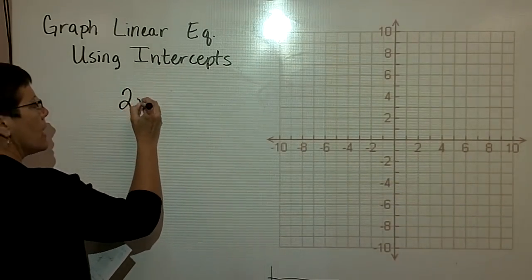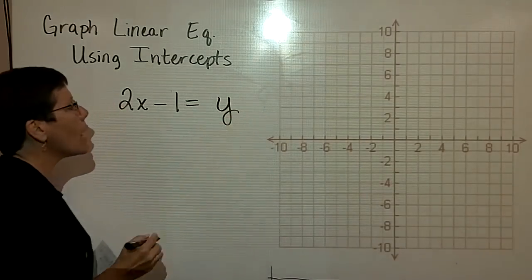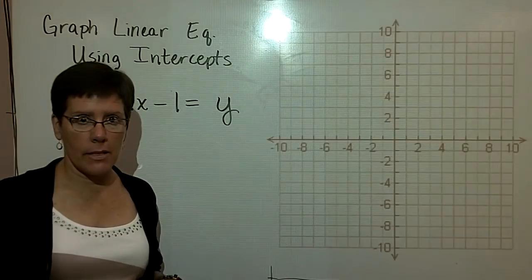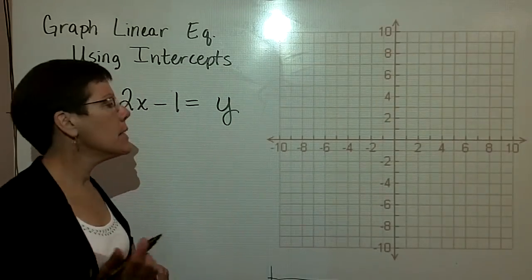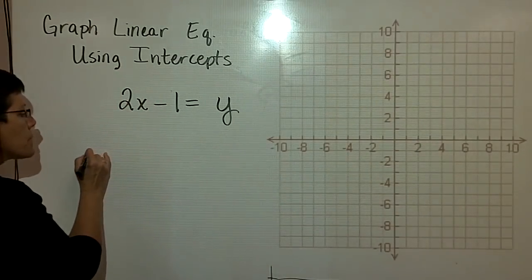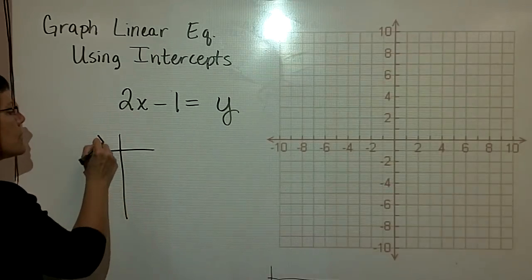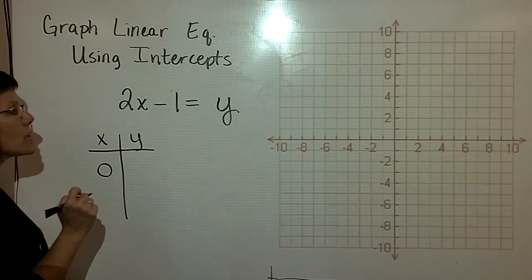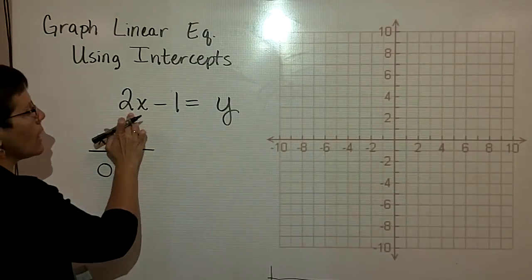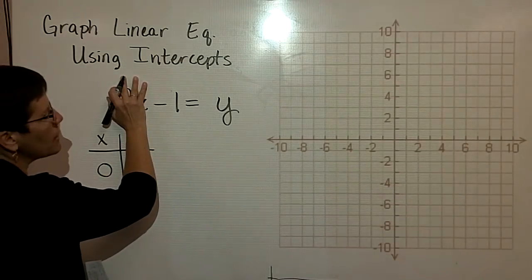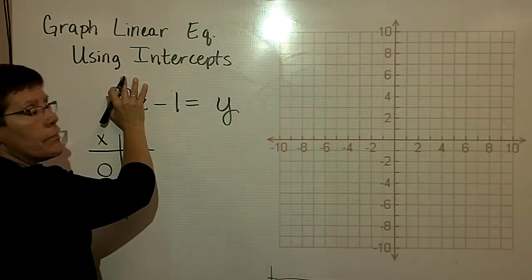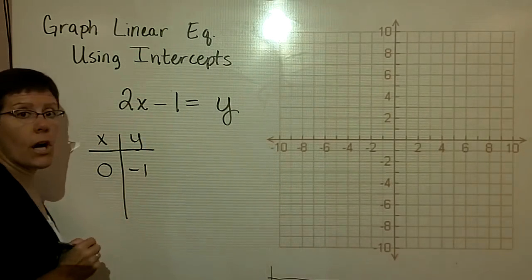So I have 2x minus 1 equals y. So first of all, the variable terms are not on one side and the constant on the other. It's in a different form. It's okay though. I'm going to go ahead and try this method. I think I'm going to go ahead and put in a zero for x first. So when I do that right here, 2 times zero is nothing. So that's gone. And I have y equals a negative 1 when that's the case. So there you go. I'm all done.